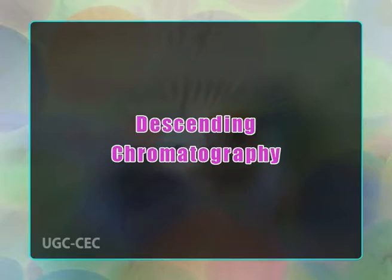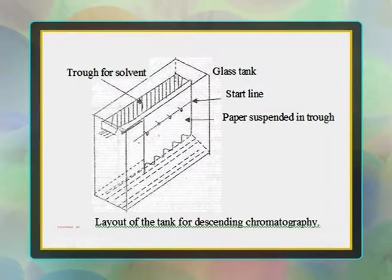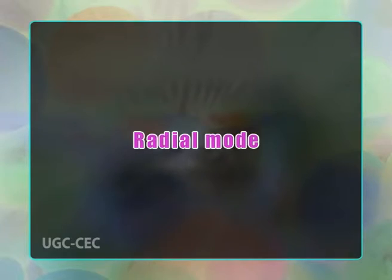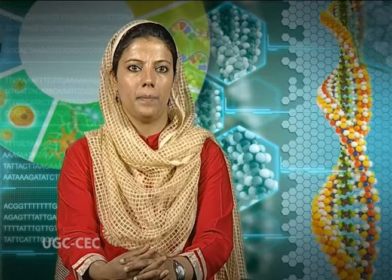Descending chromatography — development of the paper occurs due to solvent travelling downwards. The solvent reservoir is at the top, and movement is assisted by gravity besides capillary action. Ascending-descending mode — solvent first travels upwards and then downwards. Radial mode — solvent travels from the centre midpoint towards the periphery of circular chromatography paper; the entire system is kept in a covered petri dish for development of the chromatogram.